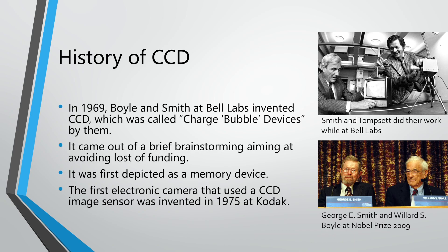The first electronic camera that used the CCD image sensor was invented in 1975 at Kodak. But Kodak filed for bankruptcy, probably because even though they invented the first camera, they didn't realize how influential it could be, and kept focusing on the film business.